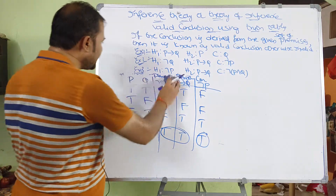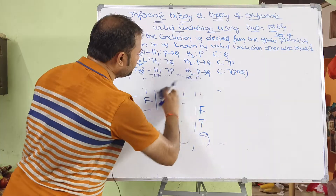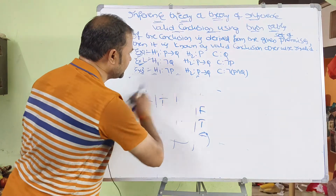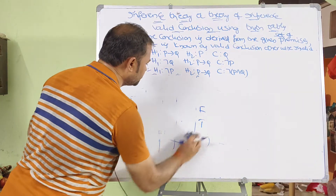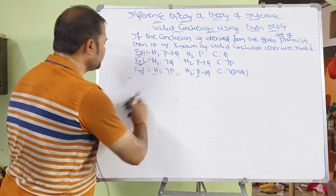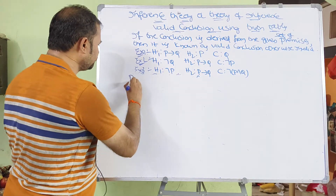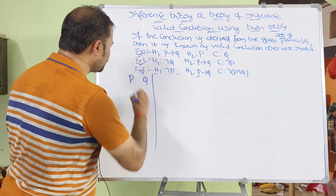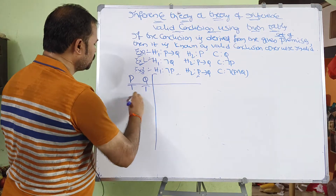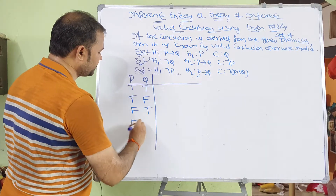Now let us look at the last example. We again have two premises and a conclusion, with two variables P and Q, giving four combinations: true-true, true-false, false-true, and false-false.